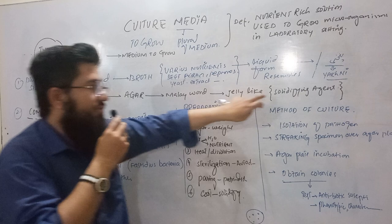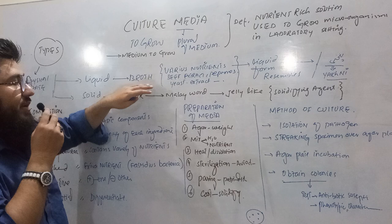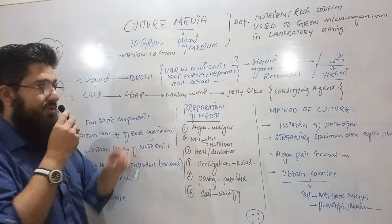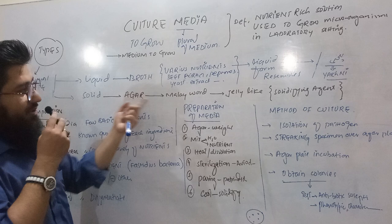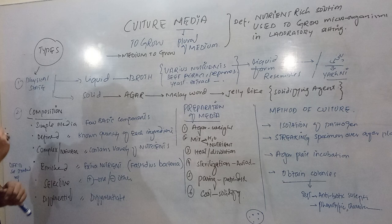In short, agar is a solidifying agent — a jelly-like substance used to provide a solid surface for the growth of microorganisms. When we add agar to broth, we get the conversion of liquid into solid, which can then be used for culture. So: liquid medium gives a liquid surface; solid medium gives a solid surface. This covers the types of culture media based on physical appearance.